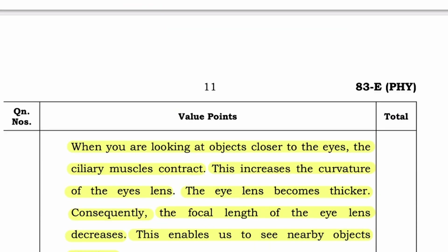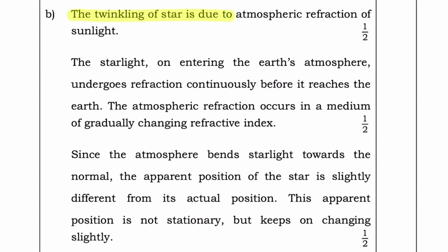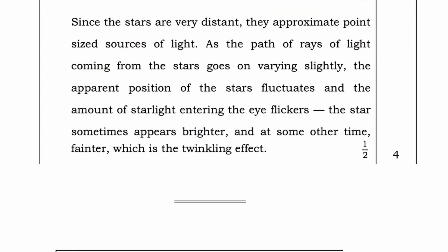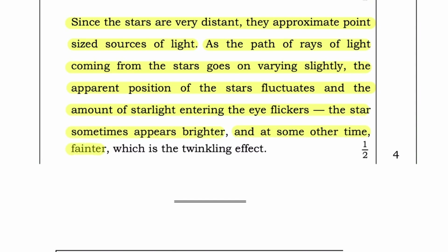Question B: Why do stars twinkle? Answer: The twinkling of a star is due to atmospheric refraction of starlight. The starlight on entering the earth's atmosphere undergoes refraction continuously before it reaches the earth. The atmospheric refraction occurs in a medium of gradually changing refractive index. Since the atmosphere bends starlight towards the normal, the apparent position of the star is slightly different from its actual position. This apparent position keeps on changing slightly. Since the stars are very distant, the amount of starlight entering the eye flickers — the star sometimes appears brighter and at other times fainter, which is the twinkling effect.